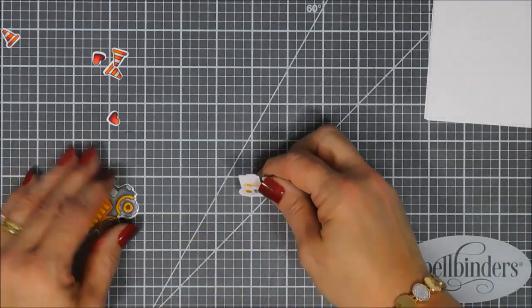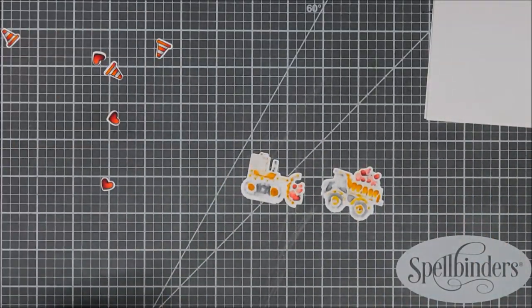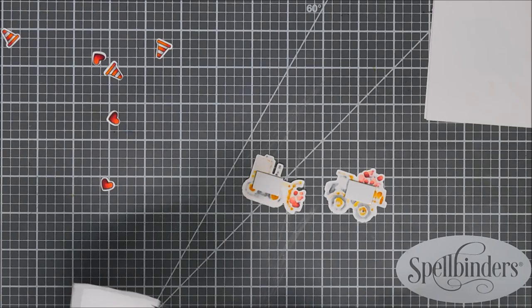I wanted to save a bit of time, but there's what they look like all die cut out. I'm going to go ahead and add foam adhesive behind each one of my trucks, and then I'm also going to add foam adhesive behind each one of the safety cones and hearts as well.